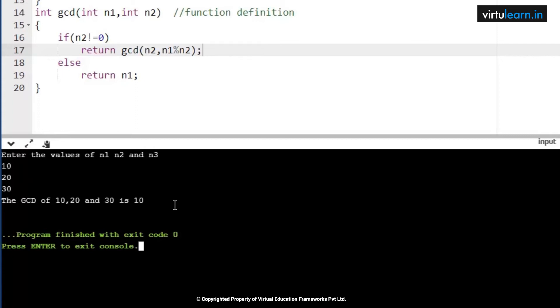Now the GCD of 10, 20, 30 is 10. If you can see, the factors of 10 are 1, 2, 5, 10. The factors of 20 are 1, 2, 4, 5, 10, and 20. Factors of 30 are 1, 2, 3, 5, 6, 10, 15, 30. Out of this, which are common: 1, 2, 5, 10. Out of this, which is the greatest one is 10.